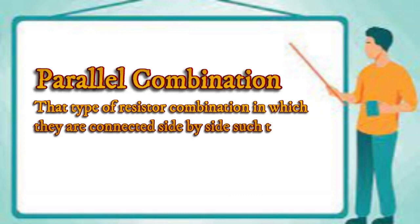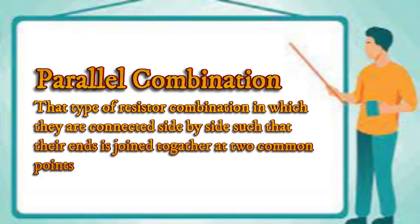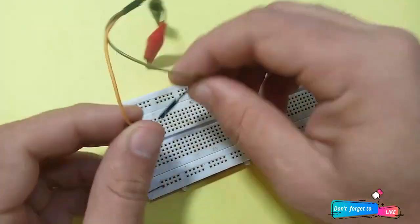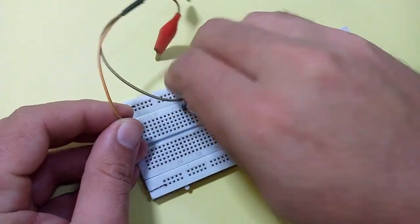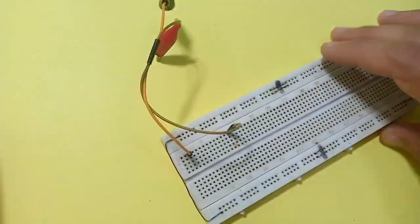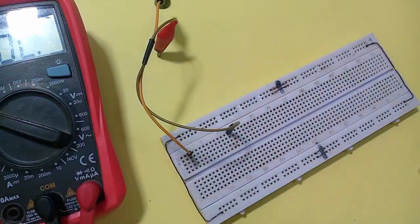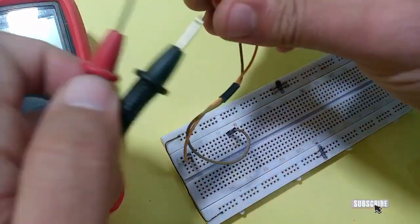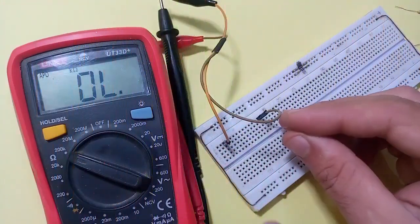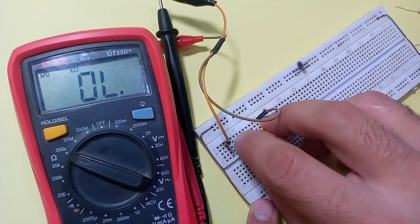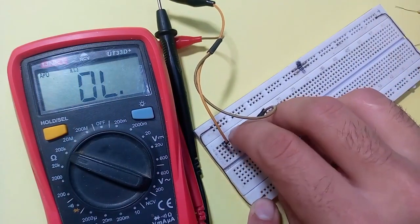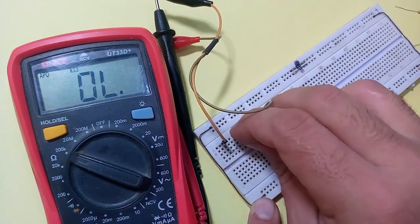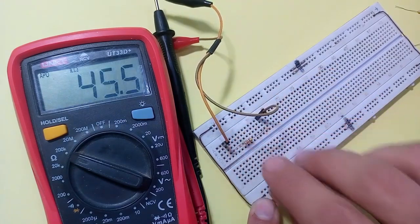Parallel combination: that type of resistor combination in which they are connected side by side such that their ends are joined together at two common points. Now to understand practically how a resistor can be combined in parallel and how its resistance is affected: add the first resistor and note the reading, which is about 46k ohms.